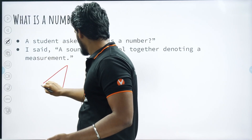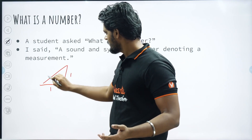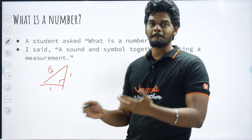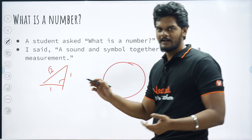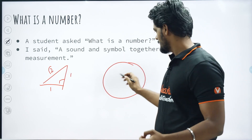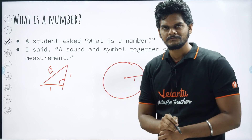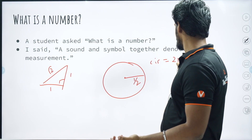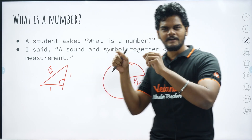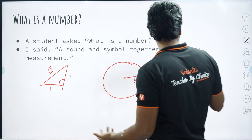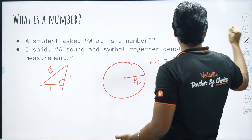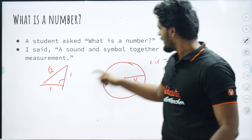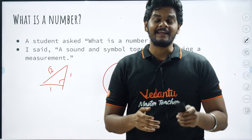If you think about it, we can measure root two. If I have an isosceles right angle triangle with sides one and one, the hypotenuse will be root two. And it is also true that I can measure pi. If I take a circle and I have a rope in the form of a circle and manage to get the radius to be one half, then the circumference will be two times pi times one half, which is pi. So if I take a rope and measure the circumference, I can actually measure pi also. So numbers are basically a sound and a symbol coming together to denote a measurement.